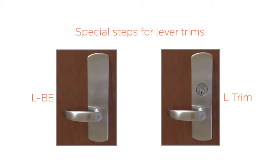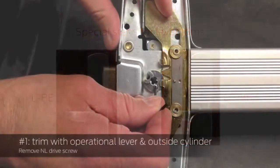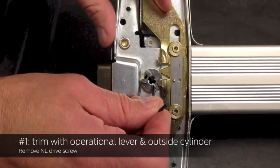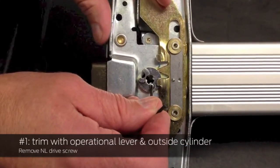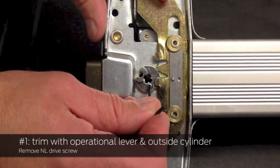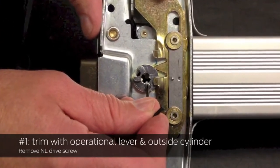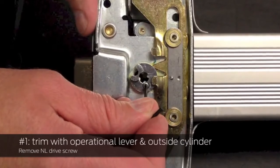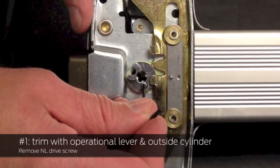If you are using lever trim, please take note of the following two applications. When installing trim that has an operational lever and an outside cylinder to lock and unlock the trim, you must remove the NL drive screw from the back of the exit device with the 5/64 inch hex wrench.